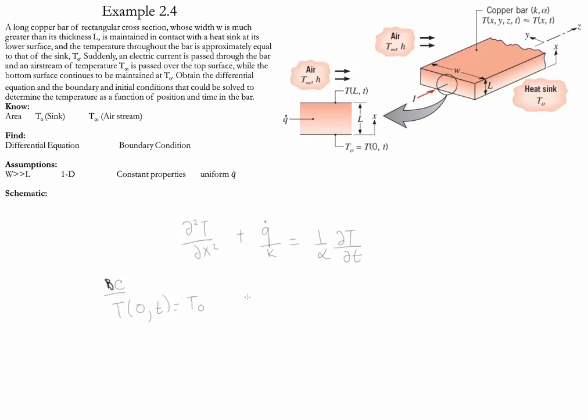At x equals L, we have convection, which is the third kind of boundary conditions. So we simply set h times the temperature at L at any time minus the fluid temperature equal to the conduction that takes place in that location.